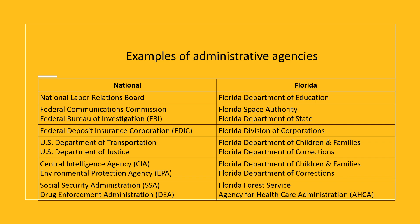Here we have some examples of administrative agencies. On the national side, we have a focus on the federal and U.S. government, as we would expect, and also some international issues, such as the Central Intelligence Agency, which works within and outside the United States. Administrative agencies that make decisions on the national side affect everyone in the country, regardless of the state they live in.